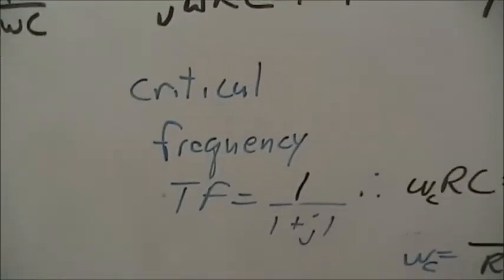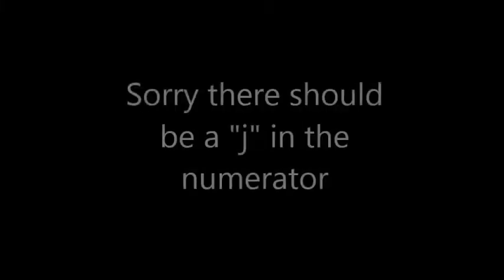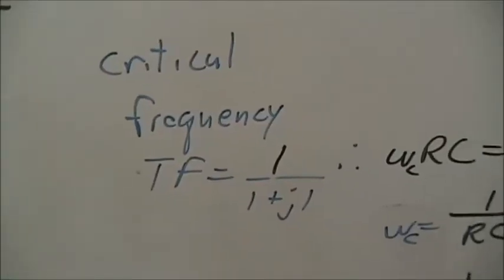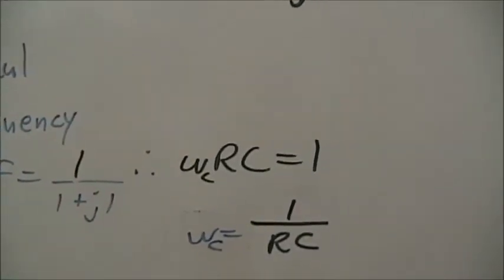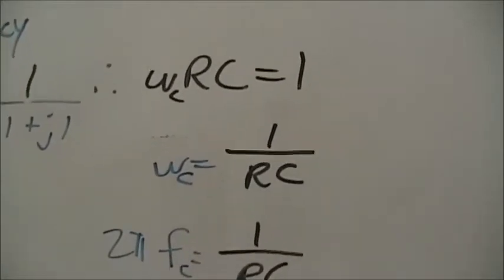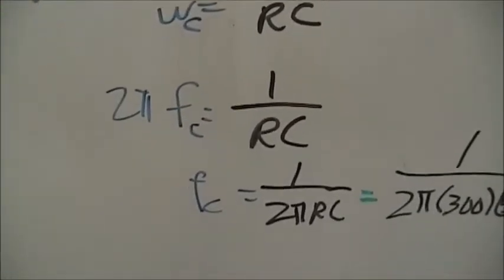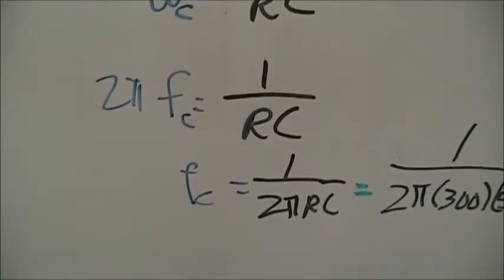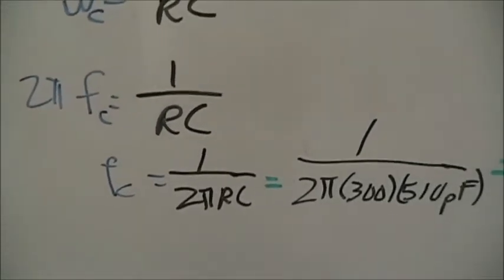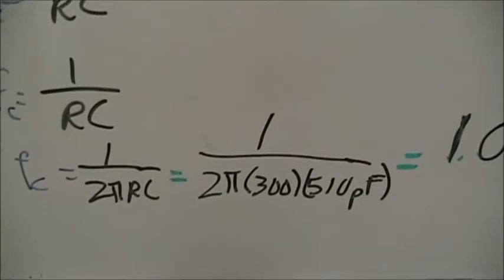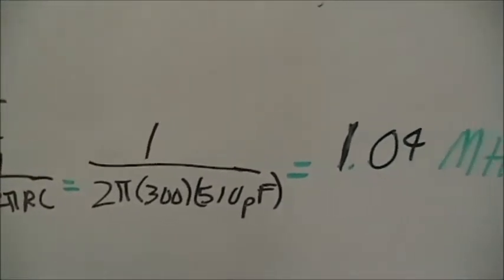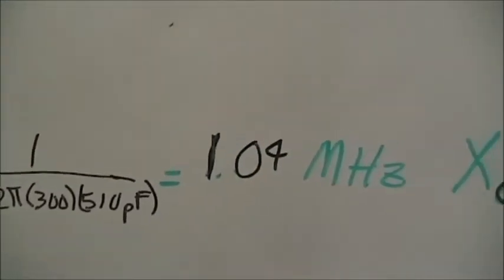The critical frequency, then, is 1 over 1 plus j1 again. ωRC equals 1, ωC is 1 over RC, and Fc is 1 over 2πRC. If we have a 300 ohm resistor and a 510 picofarad capacitor, that leads to 1.04 MHz.